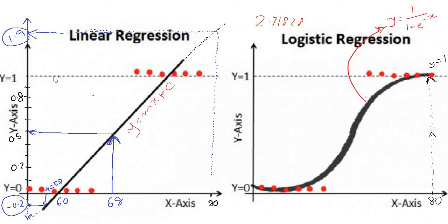With linear regression, when we predict for a value around 80 kg, the model touches the y-axis at around 1.9, and for a value around 58 kg it touches the y-axis at minus 0.2 — both of which violate the rules of probability, where values must be between 0 and 1.